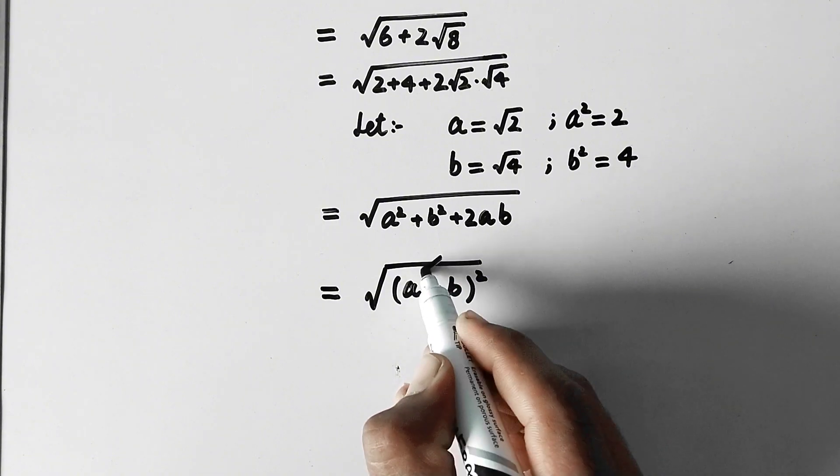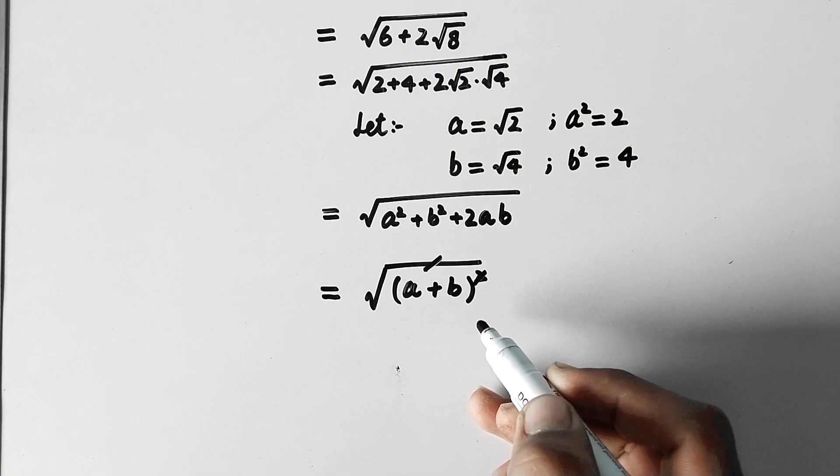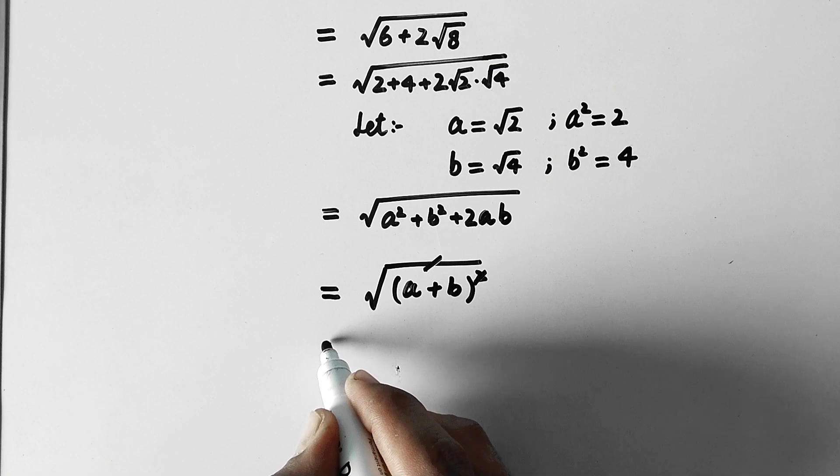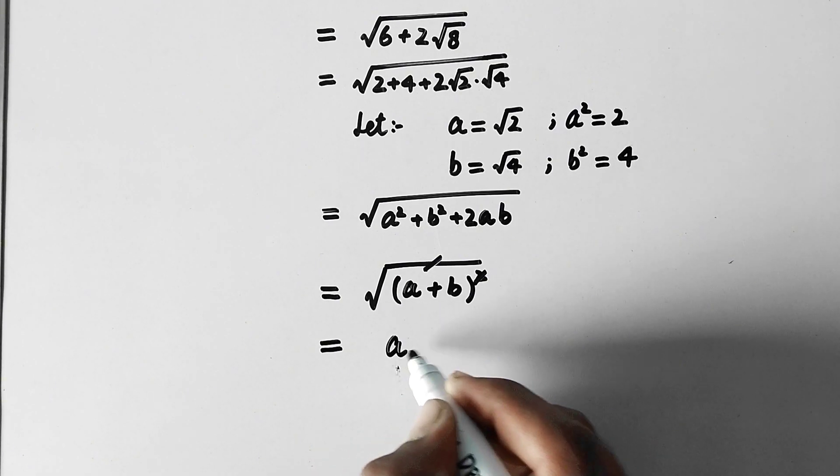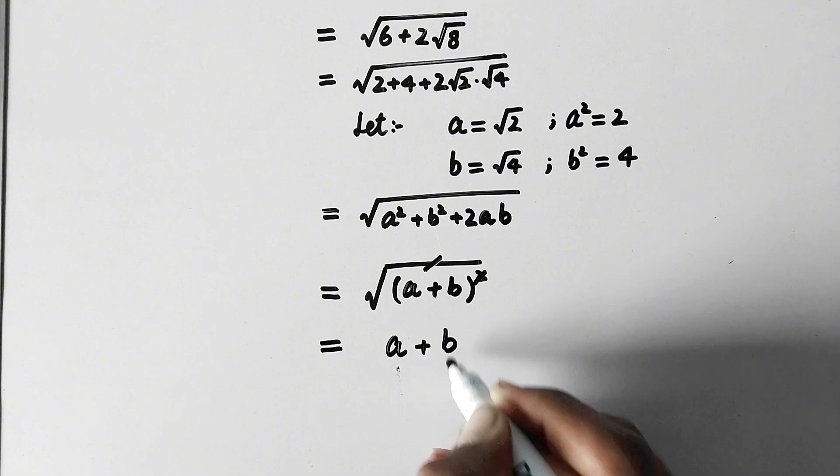So now here this square root will be cancelled by this square and we are left with a + b.